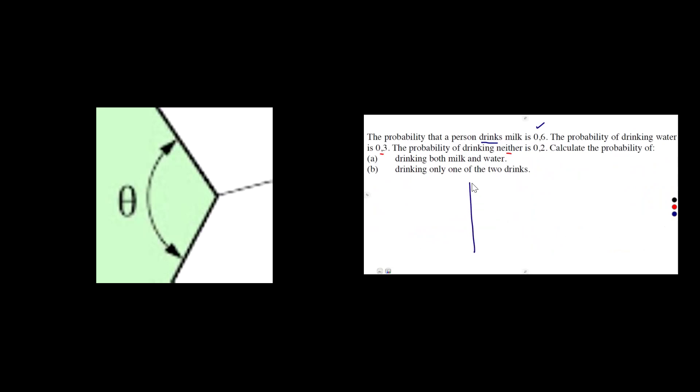So we are going to have our sample space, which is having two subsets. We are just going to take the milk as M, then water as W. So since there is an intersection that you are being asked, meaning to say these two intersect. So this is our milk and this is our water. That is the condition.